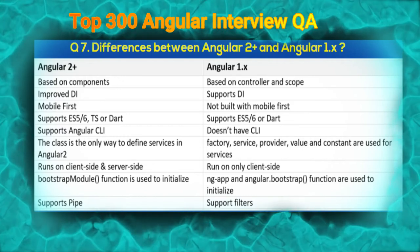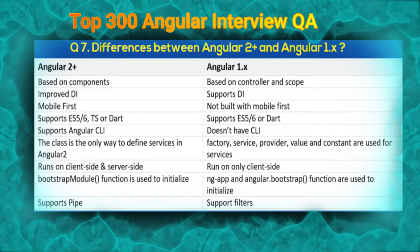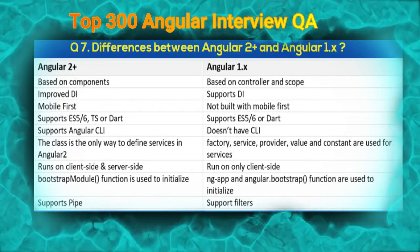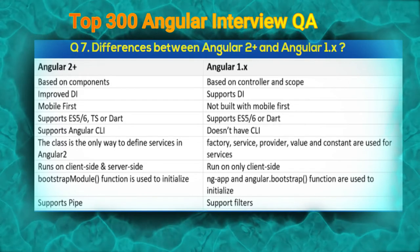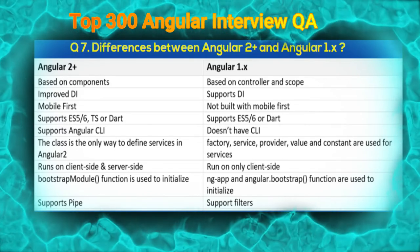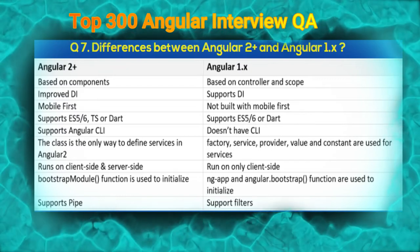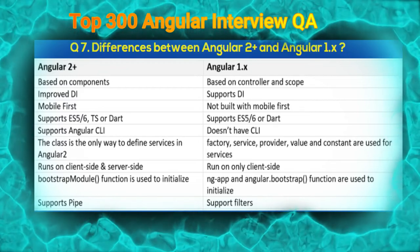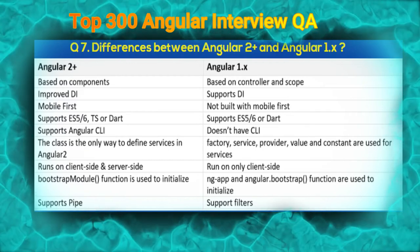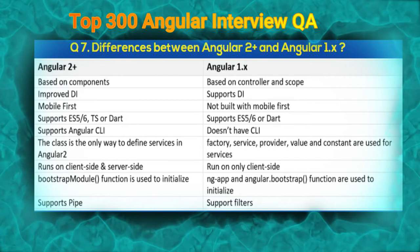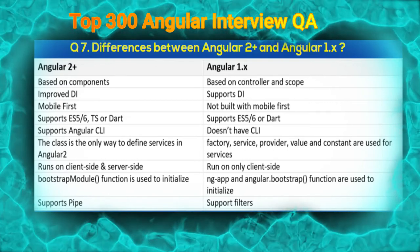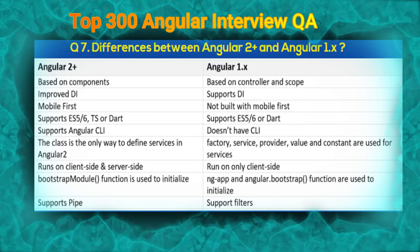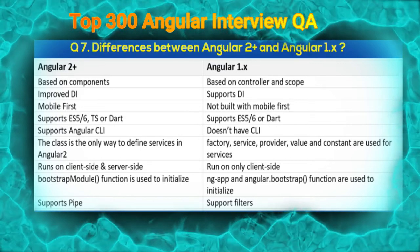In Angular, we use the bootstrap module function to initialize — inside the module's bootstrap array we inject the AppComponent, and inside AppComponent there is a selector. That selector is injected inside index.html and it loads the page. But in AngularJS, we use ng-app and the angular.bootstrap function. Also, Angular supports pipes — we can use currency pipe, date pipe, and async pipe — but AngularJS supports only filters.